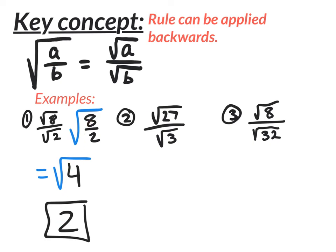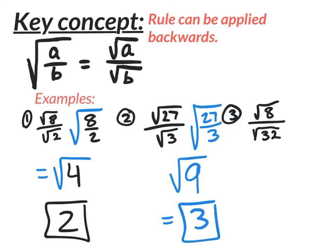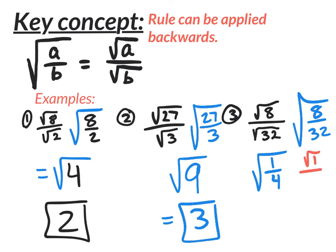Same thing with number 2: put them together and you have the square root of 27 divided by 3. Twenty-seven divided by 3 is 9, and the square root of 9 is 3. For number 3, it's not as easy, but I do the same thing — put both values underneath one square root. Then reduce the fraction inside: 8 over 32 reduces to 1 fourth. Take the root and split it again: the square root of 1 on top is 1, and the square root of 4 is 2. So the nice, beautiful answer is 1 half.